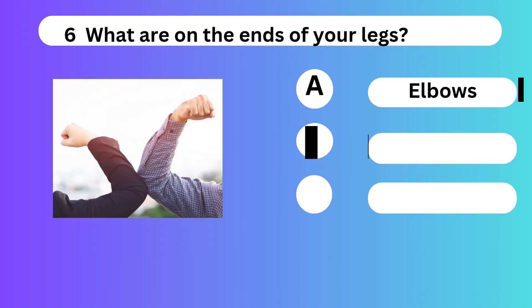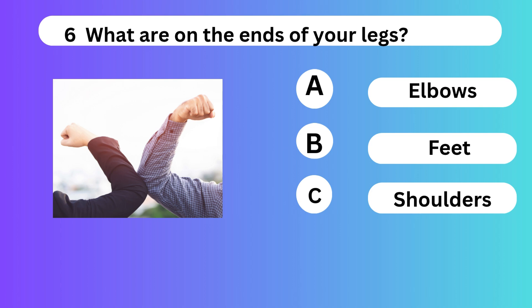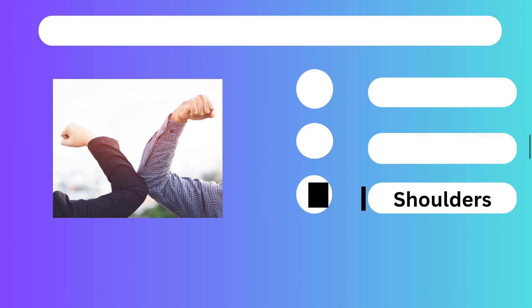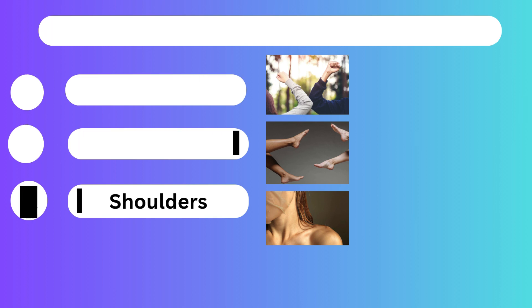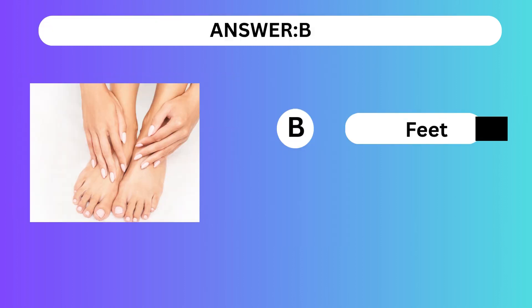Question 6. What are on the ends of your legs? A. Elbows. B. Feet. C. Shoulders. Answer is B. Feet.